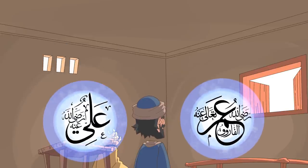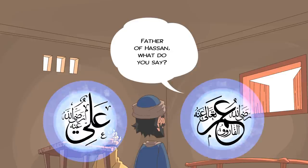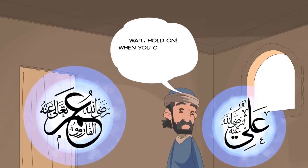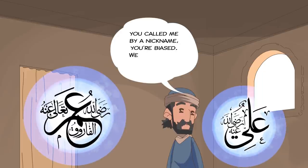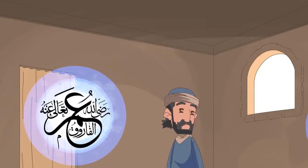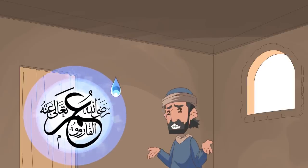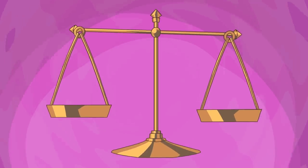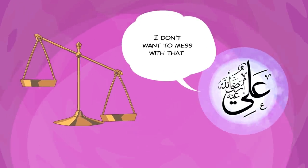Then Umar turned to Ali and said, 'أما أنت يا أبا حسن' — 'father of Hassan, what do you say?' أبا حسن means father of Hassan — that's a nickname. Ali said, 'Wait — when you called him, you called him by his actual name. You called me by a nickname. You're biased. We don't want your judgment, thank you.' And he left. Because Umar was a little soft even in the way he addressed him, and they were sensitive to that. They understood that even that much can tilt the scales — and Ali said, 'I want to be absolutely fair.'